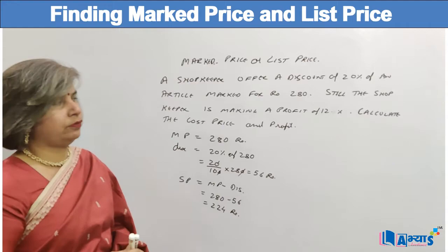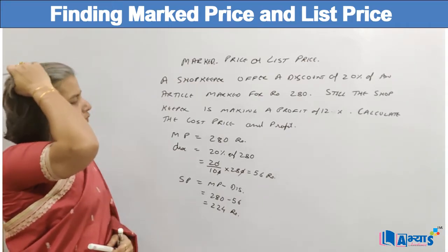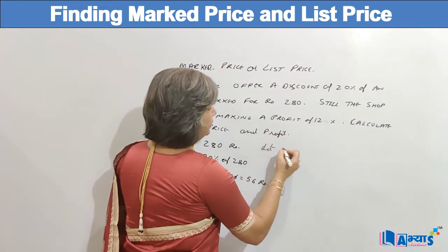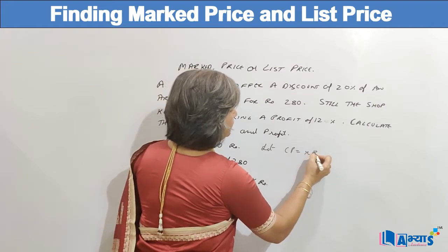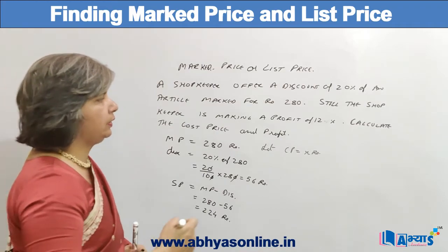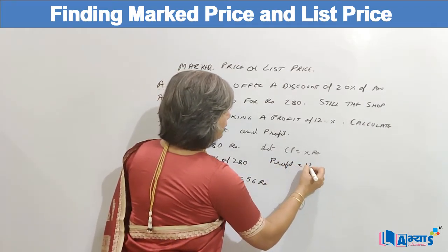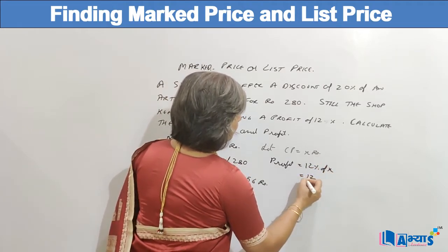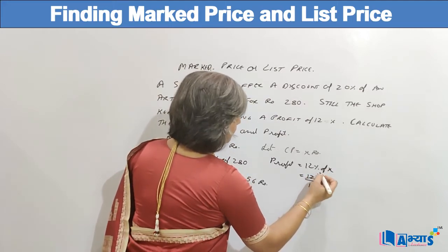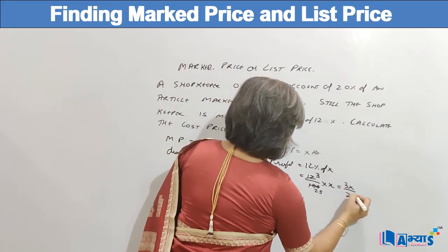So Rs. 224 is the selling price of the article which was marked for Rs. 280 and a discount of 20% was being offered. Now let the cost price be X. The shopkeeper is making a profit of 12%, so profit is equal to 12% of X, that means 12/100 × X. On simplifying by dividing by 4, we get 3X/25.